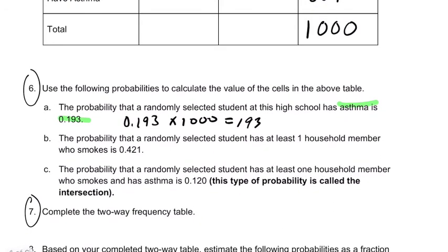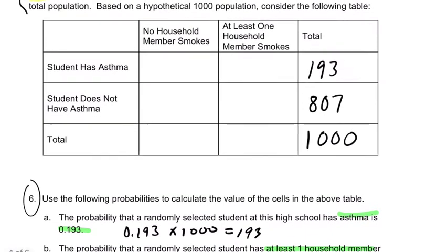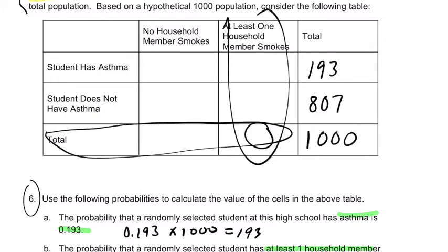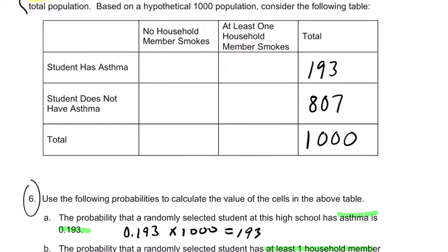The probability that a randomly selected student has at least one household member who smokes is 0.421. Again, on a scale of 1,000, you multiply by 1,000, which gives 421. This column is specifically about at least one household smoker, so 421 goes in that total spot. And then the remaining value has to be 579, because 579 plus 421 has to equal 1,000. So we're filling out this table as we go.